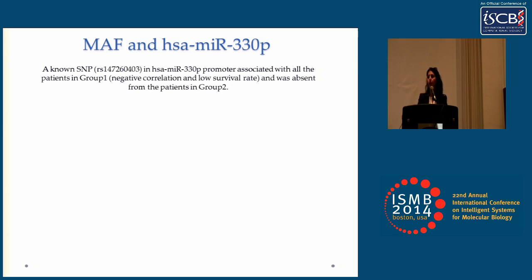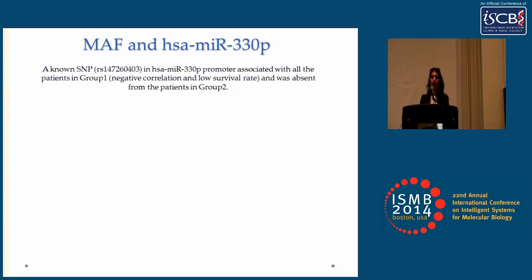The next step was to see if we could find any mutations that could explain this behavior. We analyzed 19 whole genome sequencing samples — 11 tagged as group 1 and 8 as group 2 — and first set out to identify any somatic mutations in the gene coding region that could explain the regulation or lack of regulation we observed. However, no such mutations could be found.